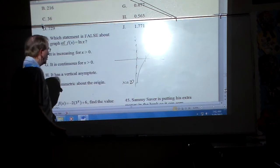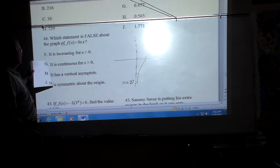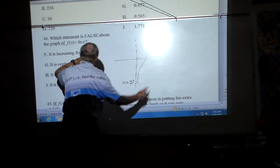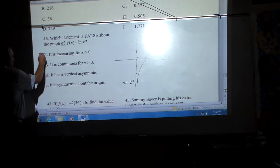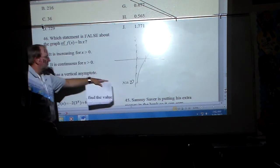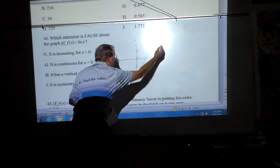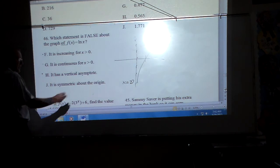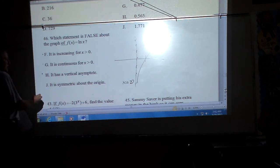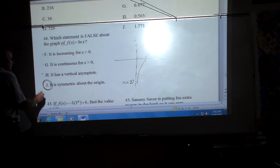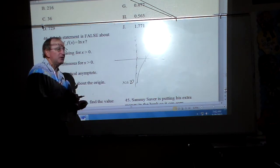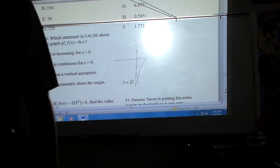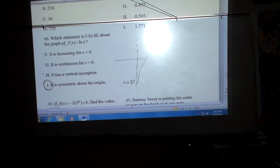And it's going to go... So basically, it is increasing for x greater than zero. Well, that is true. As you read left to right, it is increasing. So this is true. It is continuous for x greater than zero, and I believe that is true too. It does have a vertical asymptote at x equals zero. And it is symmetric by the origin. No, this is the one that is not true about that. So if you graph it on your calculator, you can see that it is not symmetric. Those are the questions that deal with logarithms on the test.